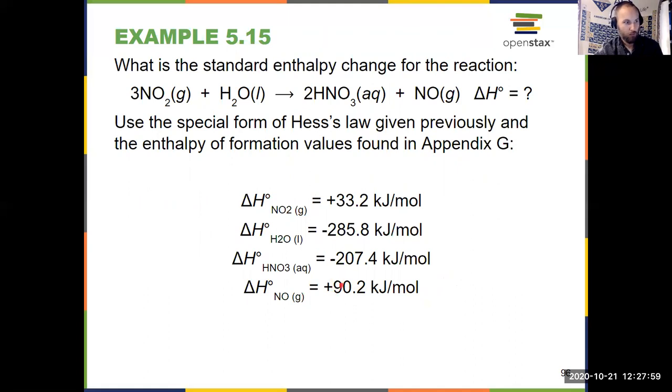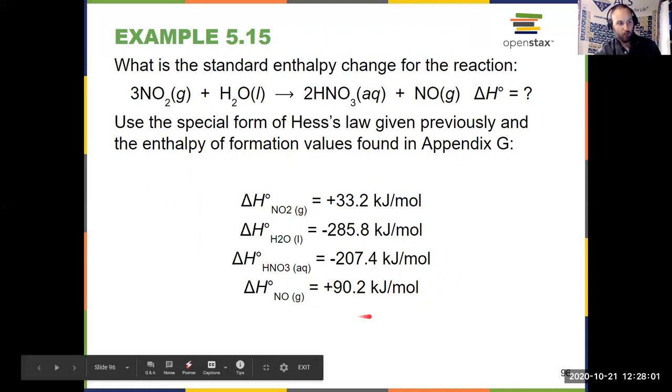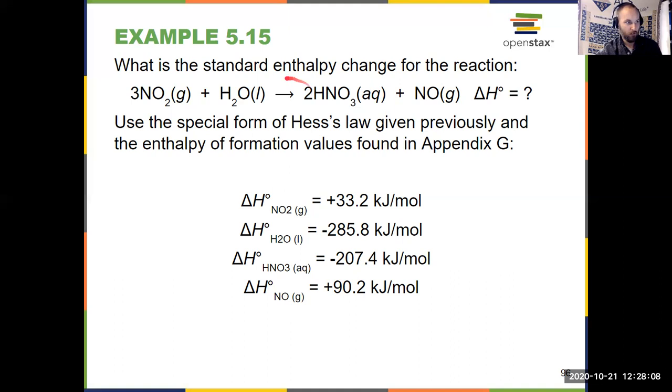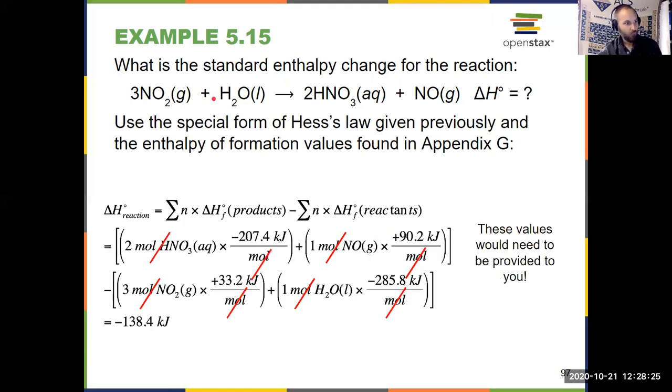So I take those values. HNO3 and NO are my two products. NO doesn't have a coefficient, so it stays as 90.2. HNO3, 207.4, negative 207.4, gets multiplied by two, because I have a coefficient of two up here. Then I add those numbers together, that's everything for my products, and I do the same thing for my reactants. Positive 33.2 multiplied by three, negative 285.8 multiplied by one, add those two values together for my reactants, and then it's just products minus reactants. And that shows you right here how to do that, final value of negative 138.4.